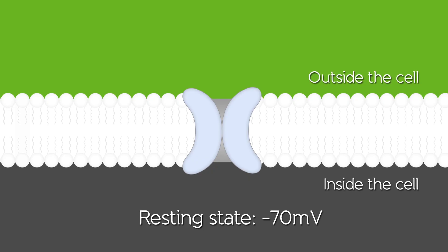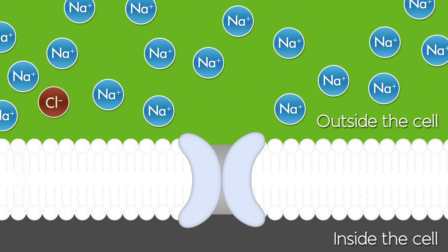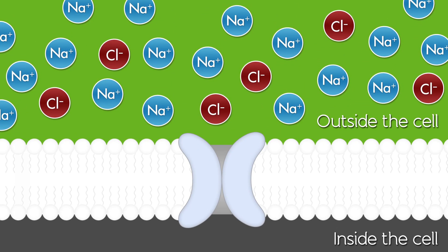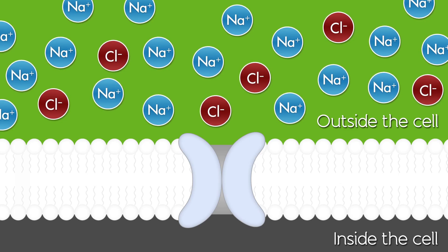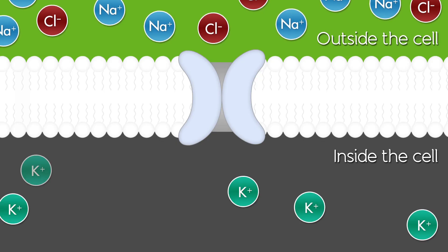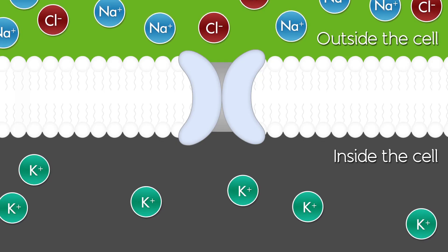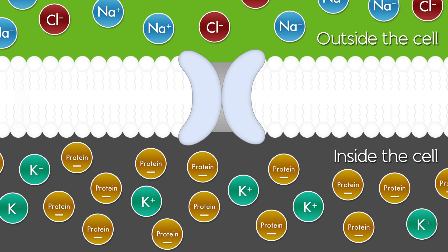The outside of the cell has a high concentration of positively charged sodium ions, as well as negatively charged chloride ions, more commonly known as salt or sodium chloride. The inside of the cell has a smaller amount of positively charged potassium ions, and a larger quantity of negatively charged protein ions.